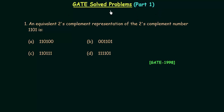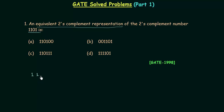Welcome to the first part of solved problems. In the first problem, we have to find the equivalent 2's complement representation of the 2's complement number 1101. This number is already in 2's complement representation and we have to find an equivalent 2's complement representation for it.